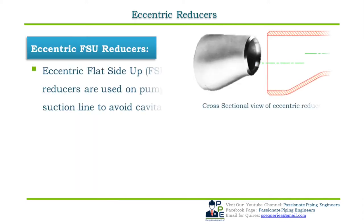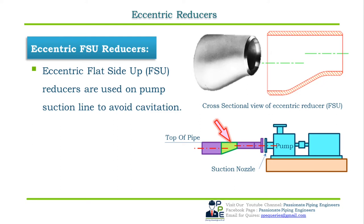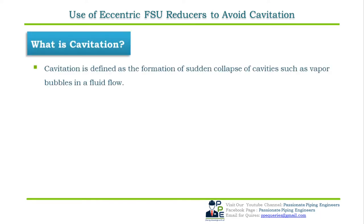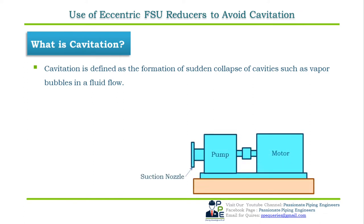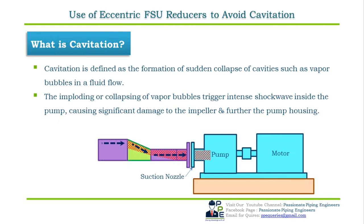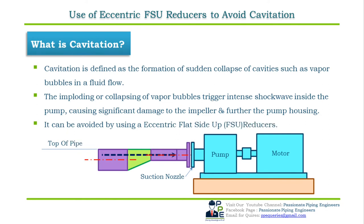Eccentric flat side up (FSU) reducers are used to maintain the upside of the pipe and are used in pump suction lines to avoid cavitation. Cavitation is defined as the formation and sudden collapse of cavities such as vapor bubbles in a fluid flow. A pump is designed to handle liquids, not vapor — the collapsing vapor bubbles trigger intense shock waves inside the pump, causing significant damage to the impeller and pump housing. Using a concentric reducer or flat side down reducer can create this problem; it is avoided by using a flat side up reducer.